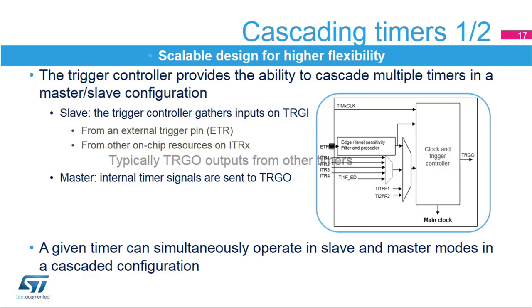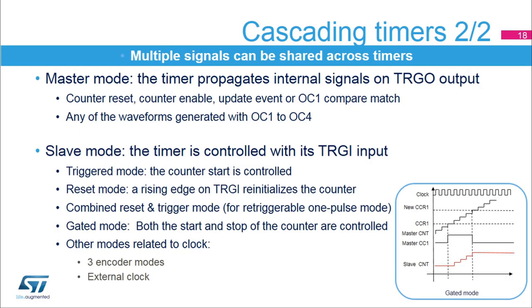This slide lists the various operating modes and signals exchanged between timers. In master mode, eight options are given for selecting the trigger to be sent on the TRGO output. The output can be a single synchronization pulse issued upon counter reset, counter enable, the update event, or the compare 1 match event. Alternatively, the TRGO output can also transmit one of four waveforms generated, including PWM signals, to the other timer modules.